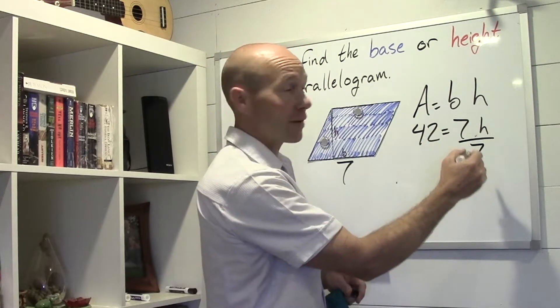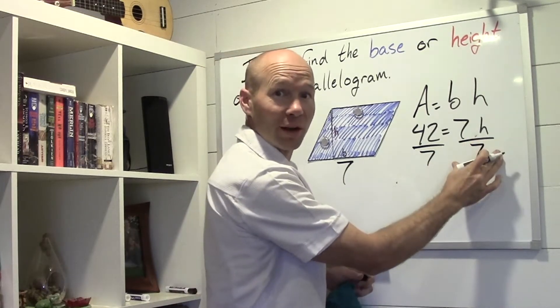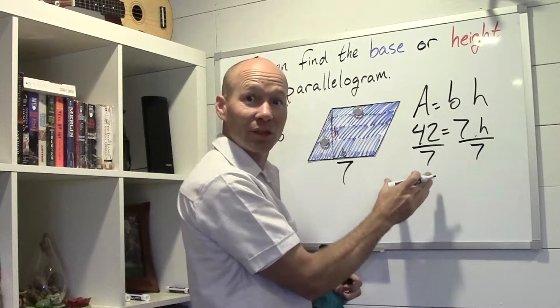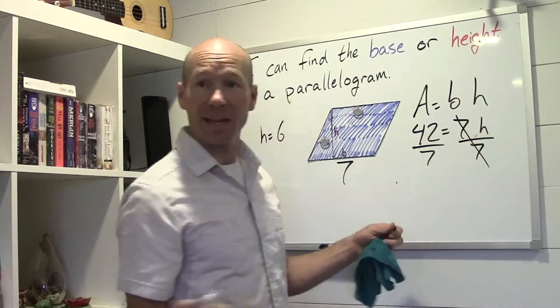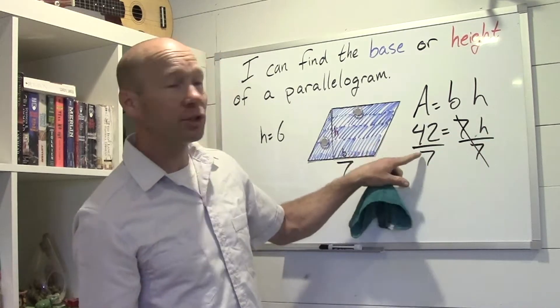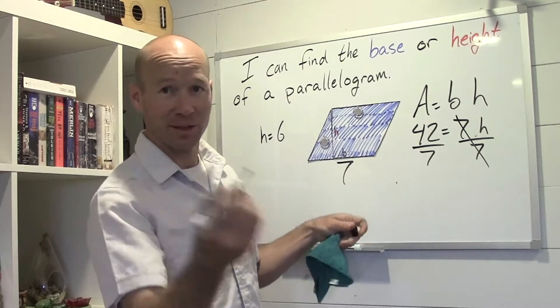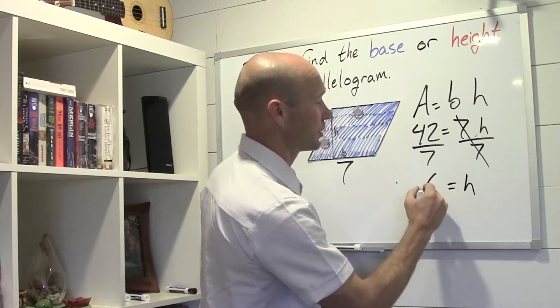And seven cancels out seven, and 42 divided by seven. Because whatever I do to the right side of the equation, I need to do the same thing to the left side of the equation. Well, seven divided by seven cancels each other out, so I get h on one side and 42 divided by seven is six. So h equals six.